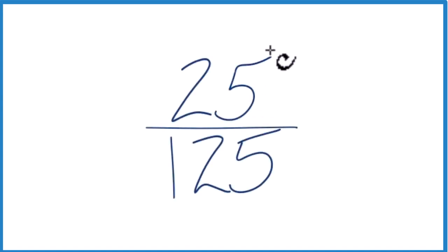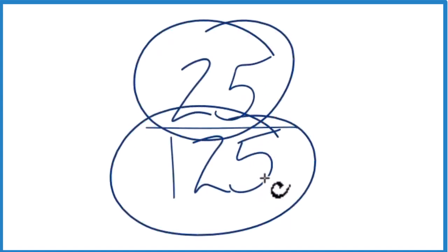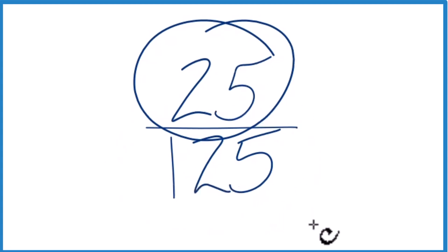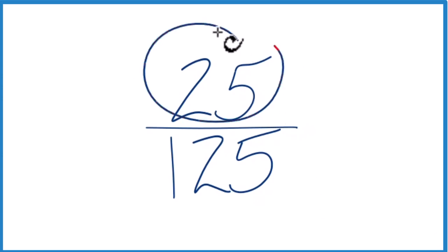Let's simplify the fraction 25 over 125. To do that, what we want to do is find another fraction that's equivalent to 25 divided by 125, has the same decimal value, it's just that we've simplified it.